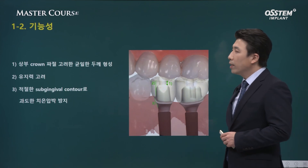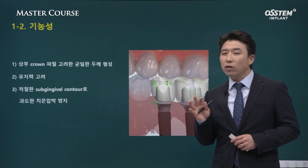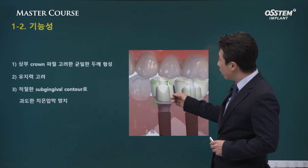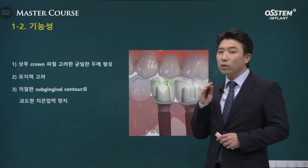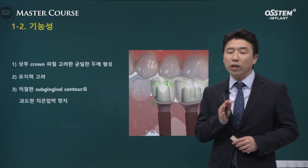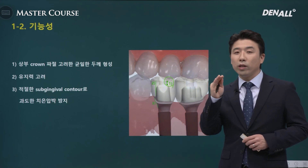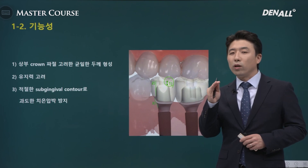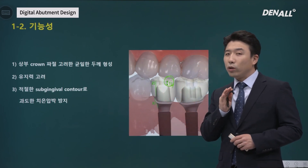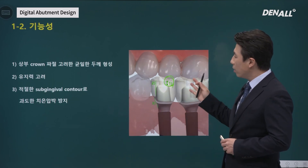This is a step before providing the prosthesis. The importance of abutment shape is underscored, and considerations for crown thickness at the abutment level are fundamental. The appropriate thickness varies depending on whether the material is gold, zirconia, or PFM. The distance to the antagonist also affects how much space is needed, and these considerations must be made.